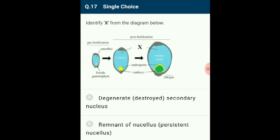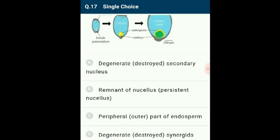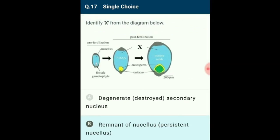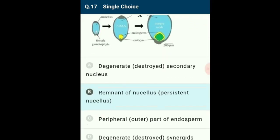Question 17: Identify eggs from the diagram given below. Nucellus is a nutritive tissue present in the ovule that provides nutrition to the developing embryo sac. In some ovules where the nucellus is abundant, it persists even after the development of the embryo sac; these remains of nucellus are called perisperm, observed in seeds of beet, coffee, etc. The answer is option B: the eggs represent remnants of nucellus.